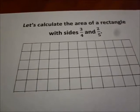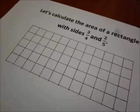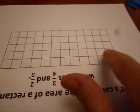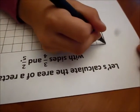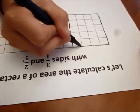We need to figure out the area of a rectangle with sides 3/4 and 4/5. Since the denominators are 4 and 5, would you draw a rectangle that is 4 by 5?